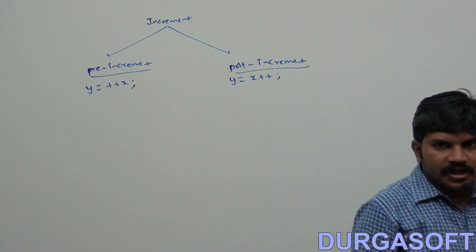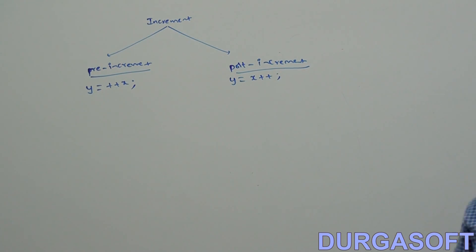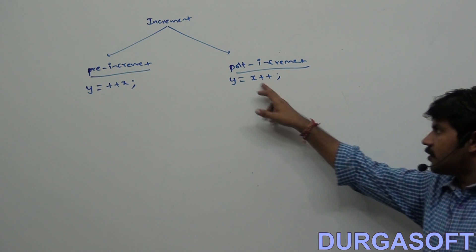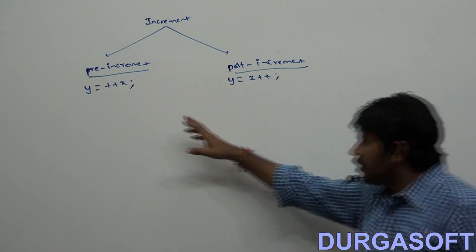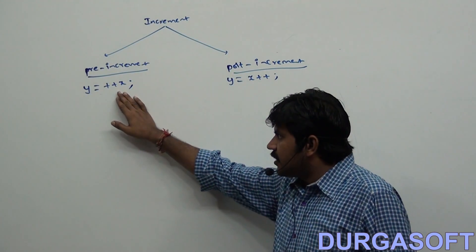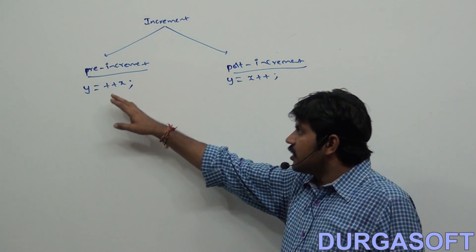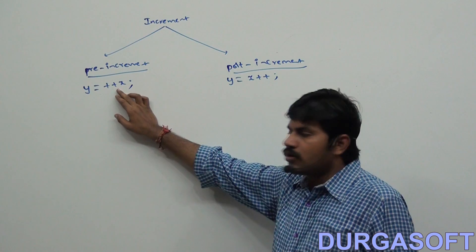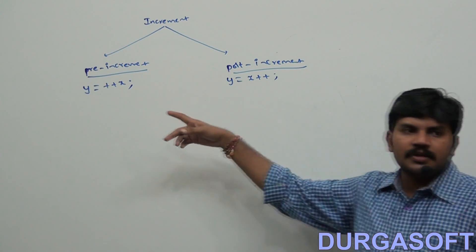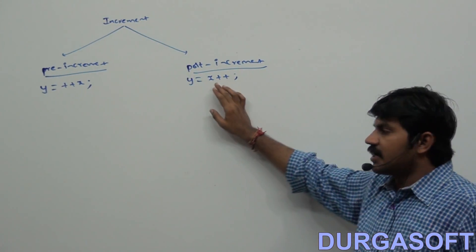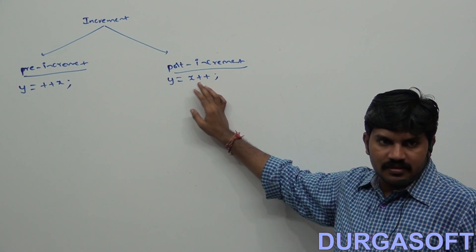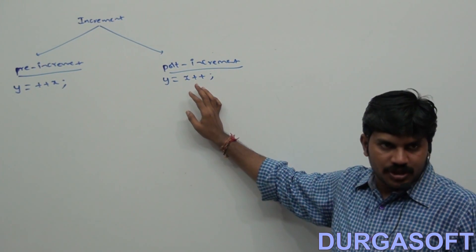So what is pre-increment? What is post-increment? You should be clearly aware. In pre-increment, increment happens first, then assign. In post-increment, assign happens first, then increment. So increment happening at the beginning is called pre-increment; increment happening at the end is called post-increment.